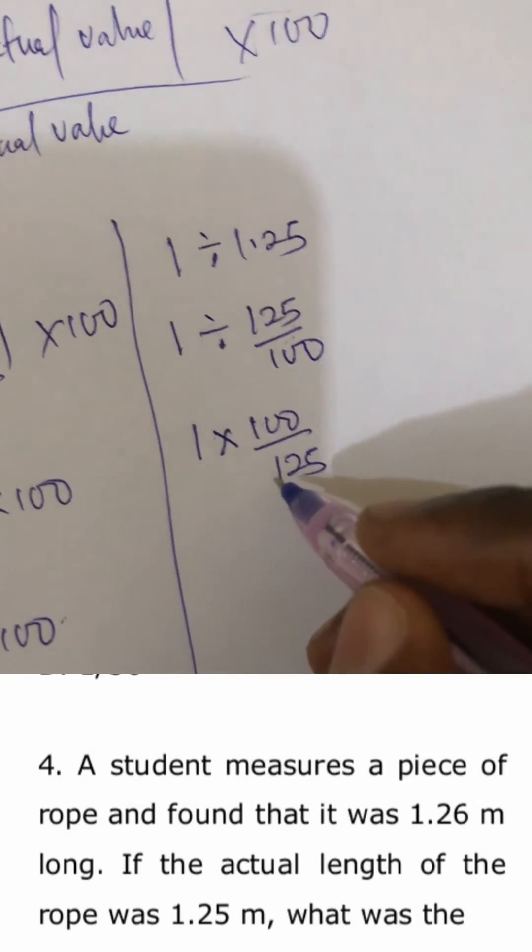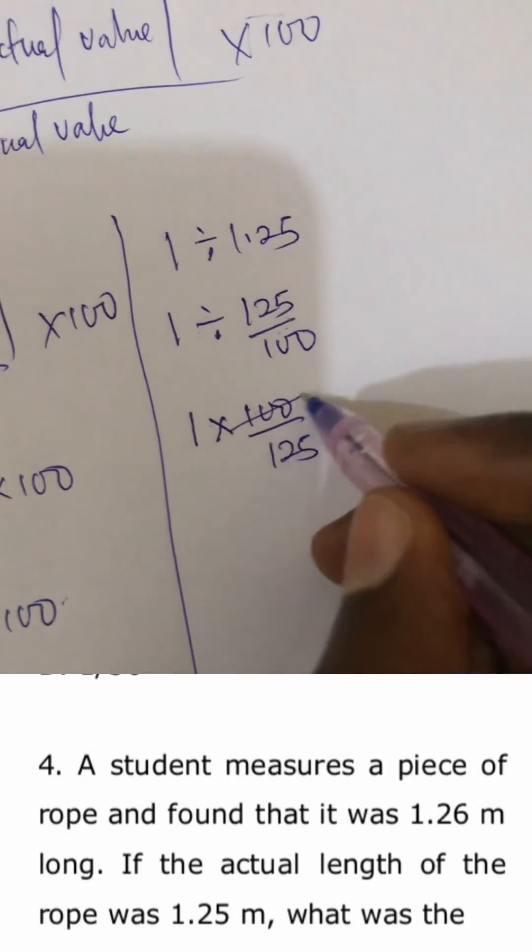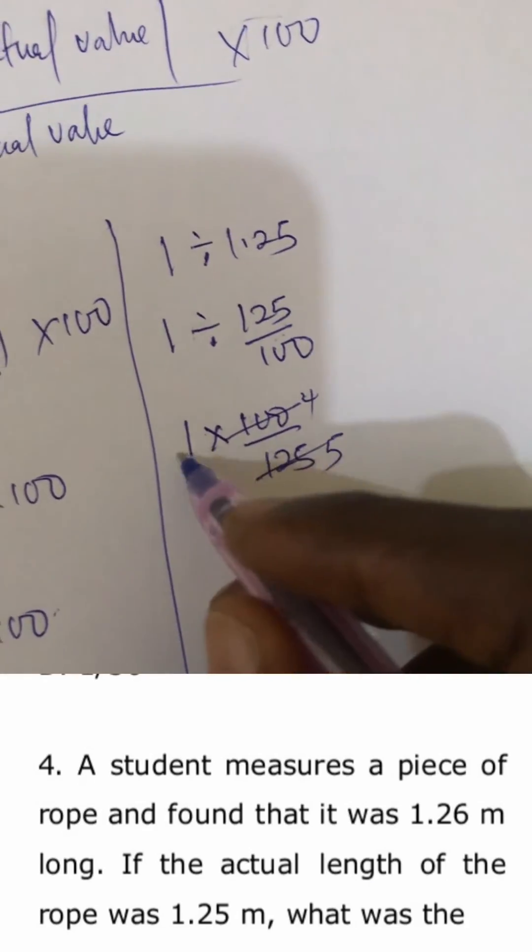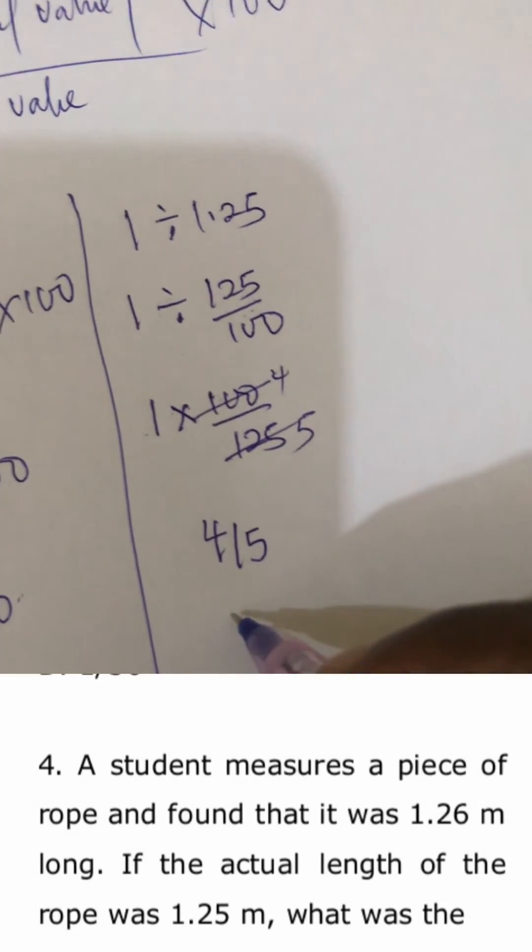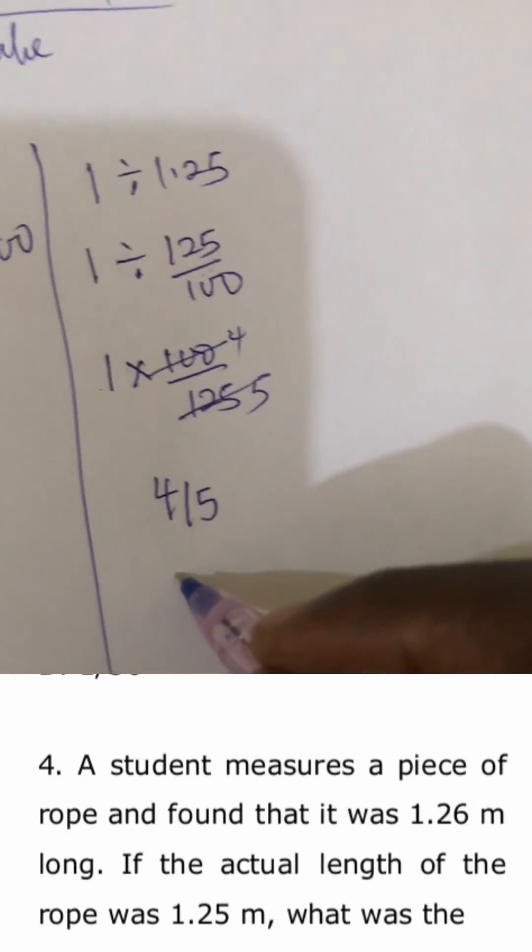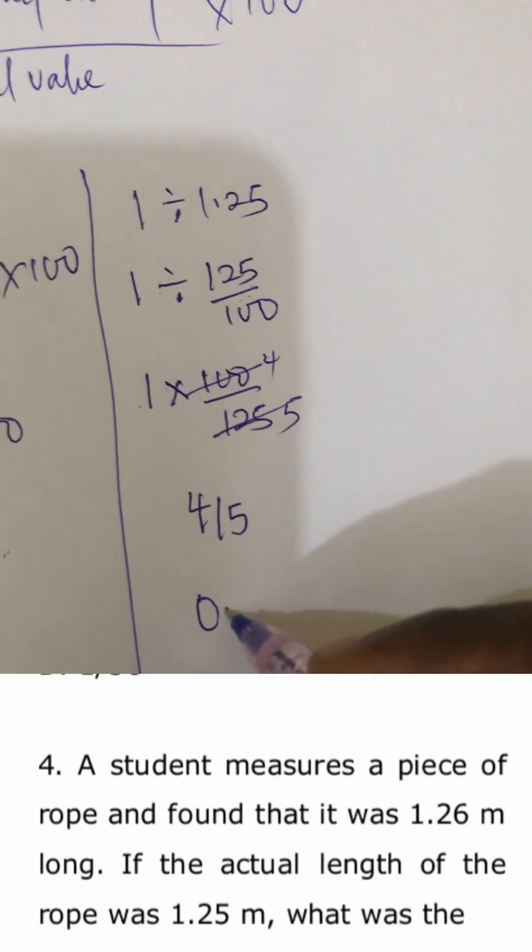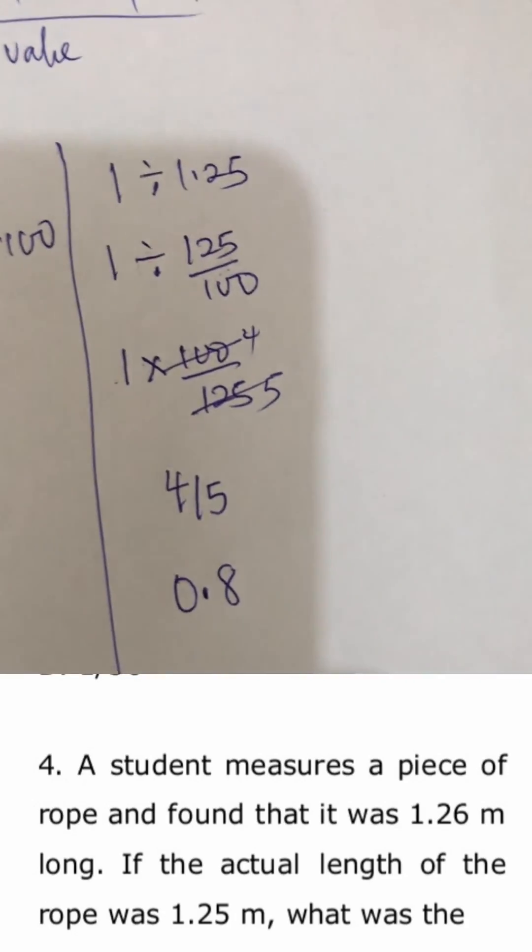And dividing to the lowest term, 25 goes into 100 four times, 25 goes into 125 five times. So 1 times 4 gives 4 over 5. That is the percentage error and in expressing this in decimal, this is the same as 0.8.